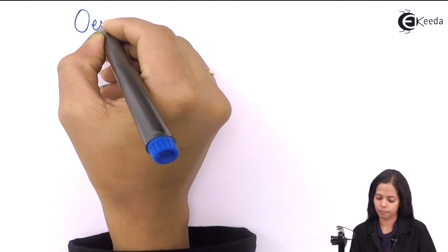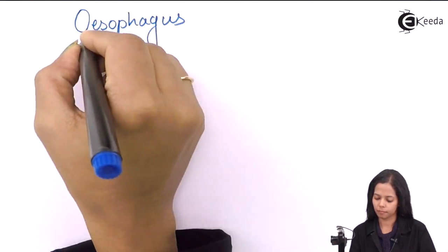The next part of the alimentary canal you are going to study is the esophagus. The esophagus is also known as the food pipe. The length of the esophagus is 25 cm.